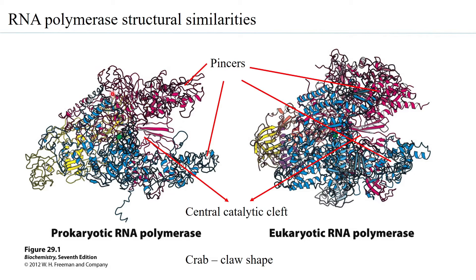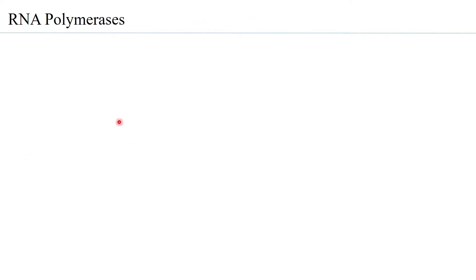There is an RNA exit channel, a nucleotide entry channel, and the DNA enters from one point. The pincers can close and open, and this conformation decides when the RNA pol is ready for initiating transcription. There is also what is called the alpha-CTD tail, which is present in both the eukaryotic and the prokaryotic RNA polymerase.